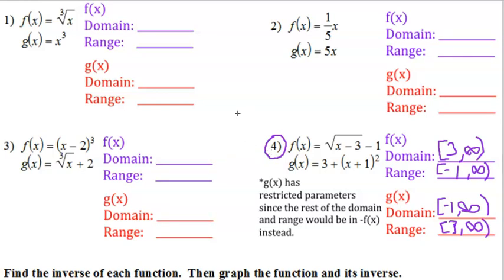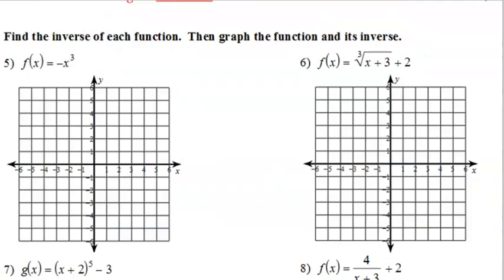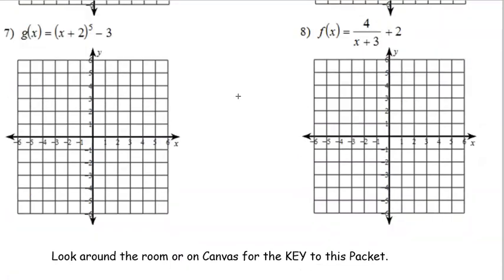On this page, the rest of the domains and ranges should be all real numbers because those are odd-degree equations, functions, even functions that will have these restrictions. Let's look at these. Find the inverse of each function, then graph the function and its inverse. Let's look at number 7 and 8.